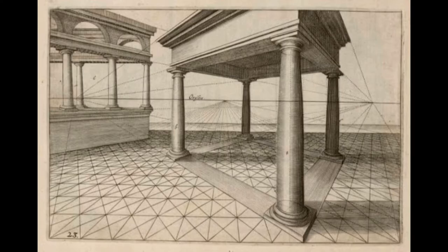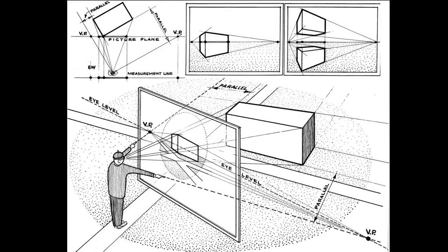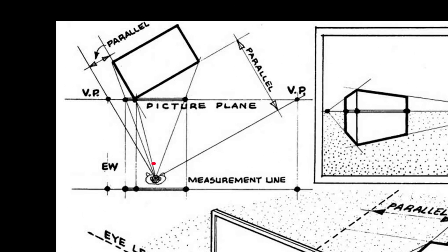Extremely complex forms can be rendered in two point perspective. And although we won't get as complicated as all of this, you could. You could start with an overhead view, plot the station point of a viewer, and the exact distance an object would be from them, and determine the two vanishing points based off the orientation of the form.